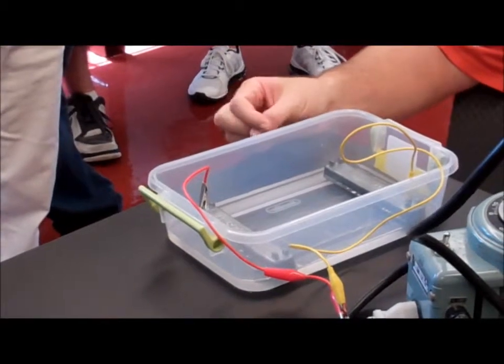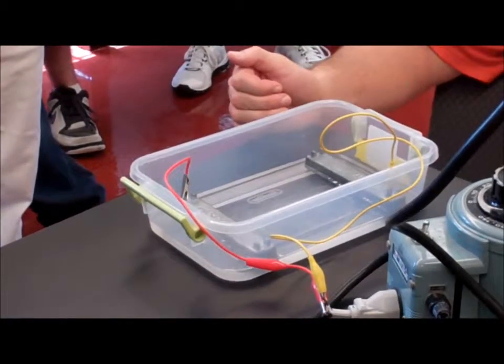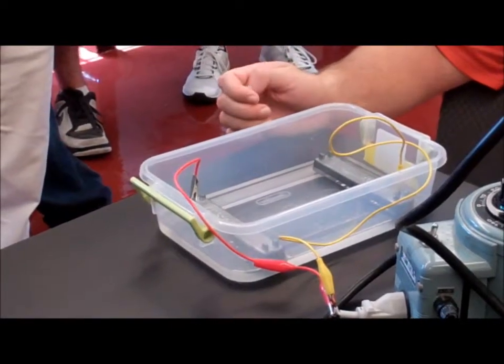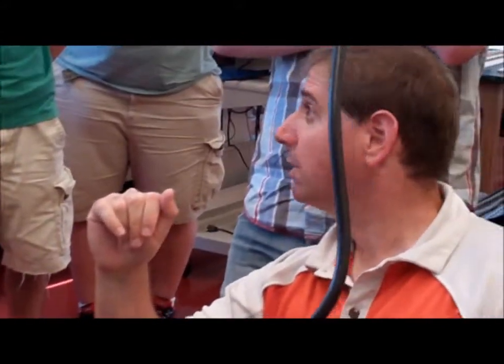We also know that the electric field between parallel plates points from high voltage to low voltage and is uniform. The electric field is uniform. Electric fields point from high to low voltage.